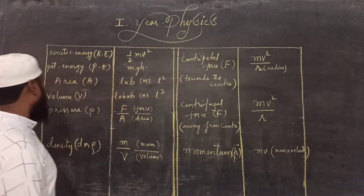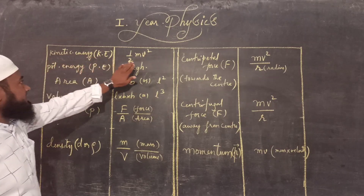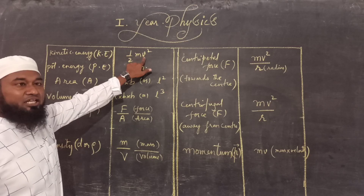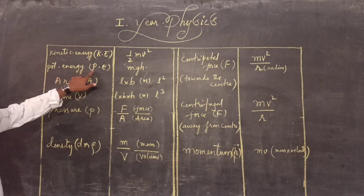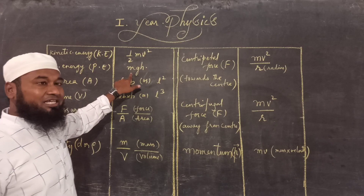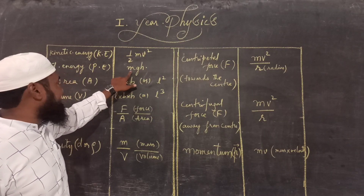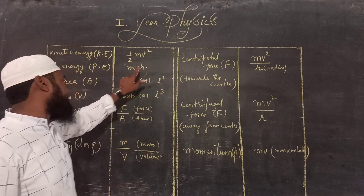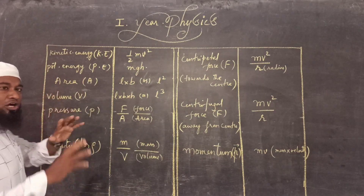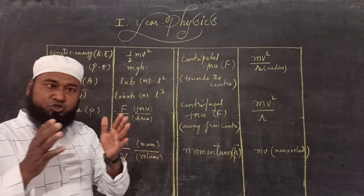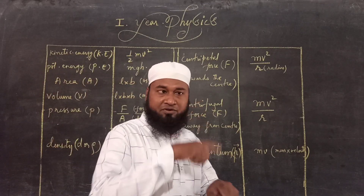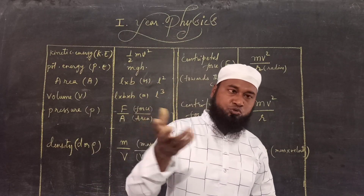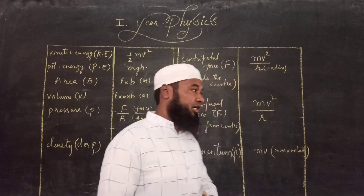The next two formulas are Kinetic Energy, with formula half mv squared, where M is Mass and v is Velocity. Potential Energy is denoted by P.E.; the formula is Mgh, where M is Mass, g is Acceleration due to Gravity, and h is the Height or changing position. Area — the area of any standard figure, whether it is a Square, Rectangle, or Circle, always contains two types of length.